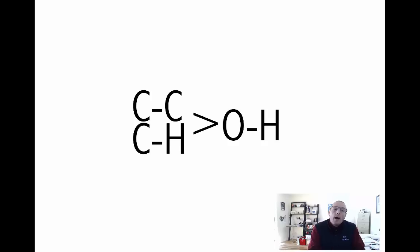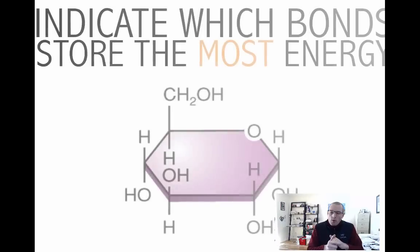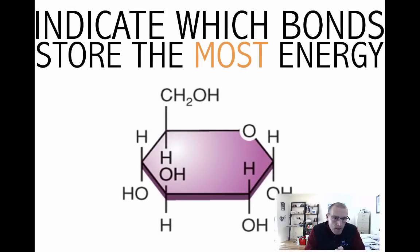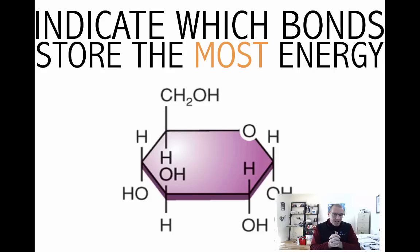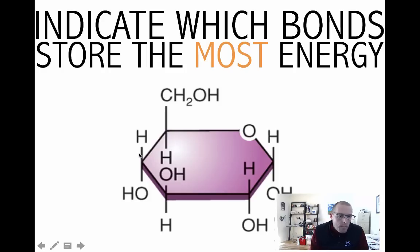Pause the video and look at this diagram of glucose. Identify the bonds that contain the most energy. Hopefully you identified any non-polar bond — for example, a carbon-hydrogen bond here contains more energy than an O-H bond here, and a carbon-carbon bond contains more energy than an O-H bond, because carbon-hydrogen and carbon-carbon bonds are non-polar whereas the O-H bond is polar.